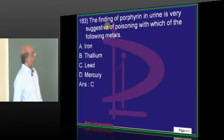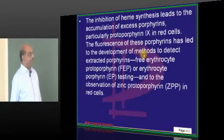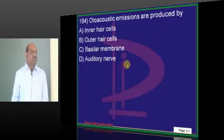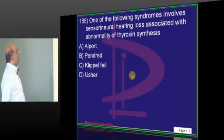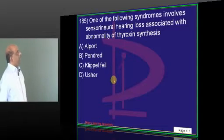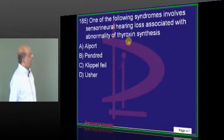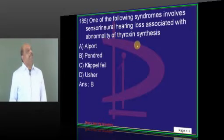So, porphyrin in the urine, lead poisoning. Otoacoustic emissions, classical question, outer hair cells. Hearing loss, sensorineural hearing loss, Pendred syndrome.